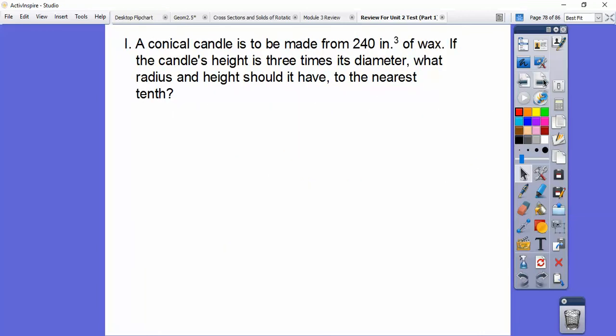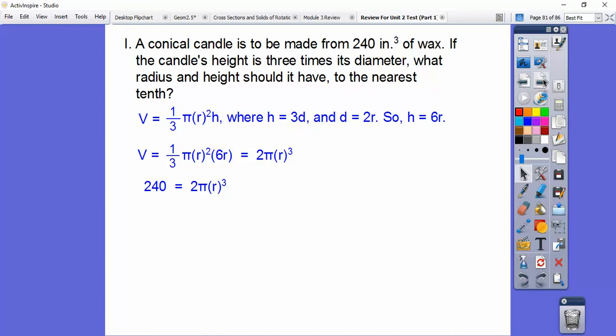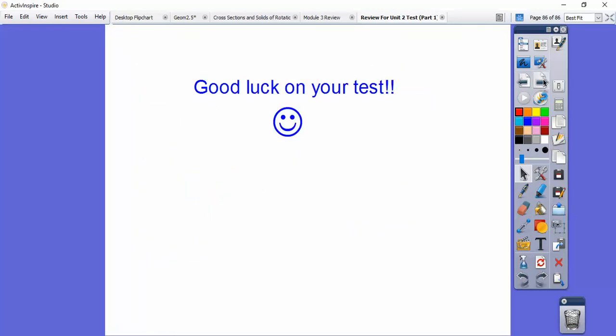A conical candle is to be made from 240 cubic inches of wax. If the candle's height is three times its diameter, what's the radius and the height to the nearest tenth? Volume of cones is one-third pi r squared h, where the height is three times the diameter. Since the diameter is 2r, then the height is 6r. We plug that in for height. Then we get the volume is 2 pi r cubed. Set that equal to 240 and divide both sides by 2 pi. There's r cubed, which is about 38.2. We cube root that. The radius is about 3.4 inches. And the height, we multiply that by 6, is about 20.4 inches. I hope you do well on the test and take care.